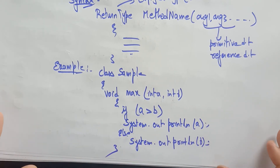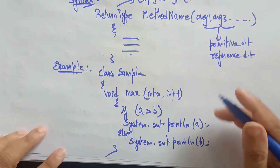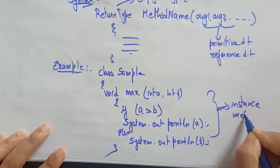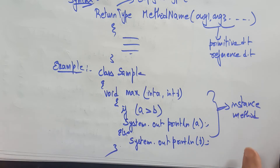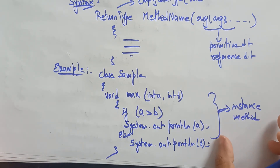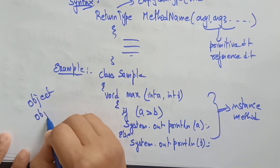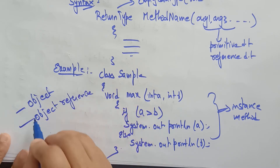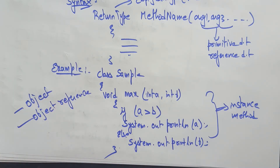Now write public static void main. This is an instance method because it doesn't have the static keyword. If the static keyword is there, it is a class method. An instance method can be accessed in two ways — by using an object, or by using an object reference.